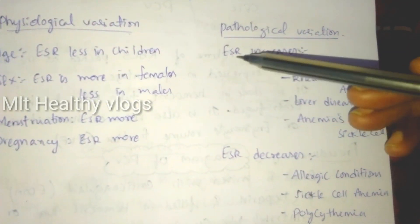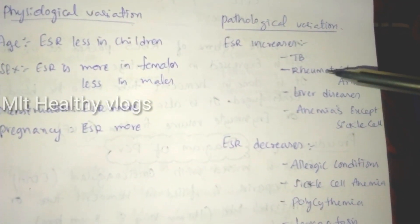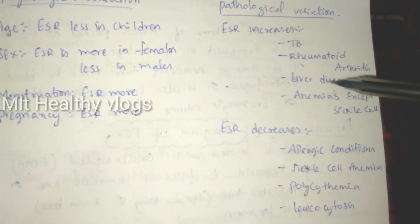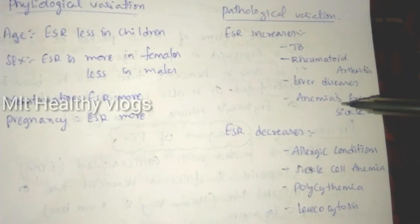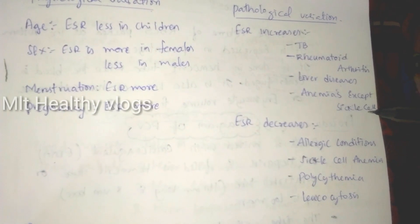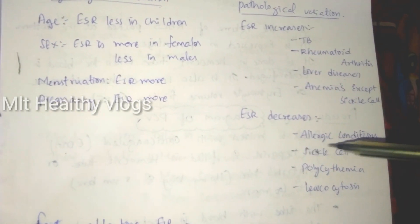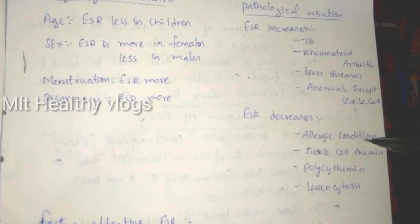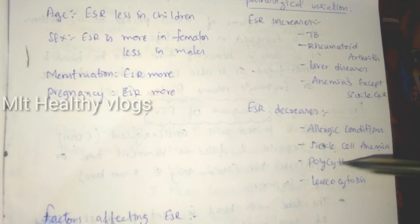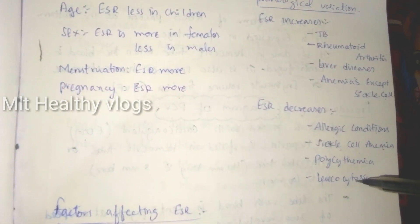Pathological variations: ESR increases in tuberculosis, rheumatoid arthritis, liver diseases, and anemias except sickle cell anemia. ESR decreases in allergic conditions, sickle cell anemia, polycythemia, and leukocytosis.